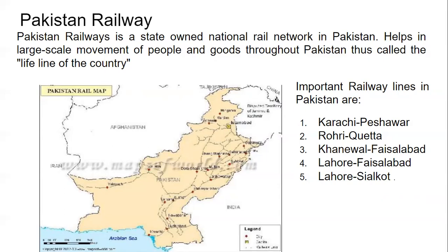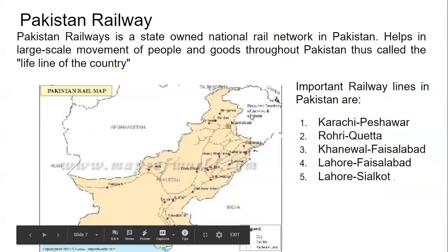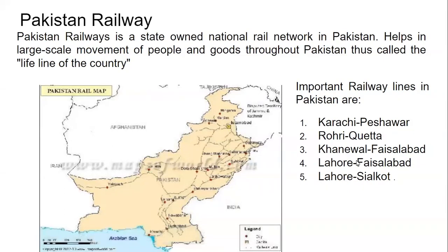Without railways, transport would be expensive and not safe. Important railway lines in Pakistan are Karachi to Peshawar, Rohri to Kotri, Khanewal to Faisalabad, Lahore to Faisalabad, and Lahore to Sialkot. You should remember these railway lines.